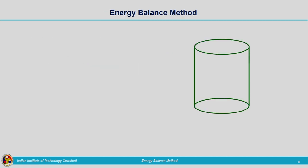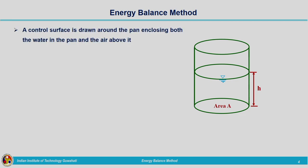Now we will start with the energy balance approach. This is a schematic representation of a pan. The pan has a base area of A, and we are filling water up to a particular level; that height of water within the evaporation pan is represented by small letter H. This is a method based on physical processes. We are going to derive the equation based on the continuity and energy equation — that is, based on the control volume approach — and we will be making use of Reynolds transport theorem.